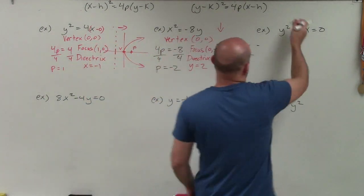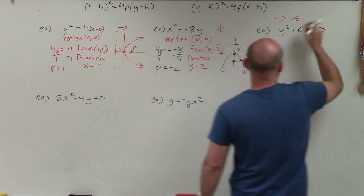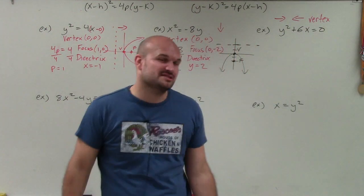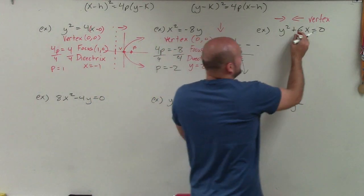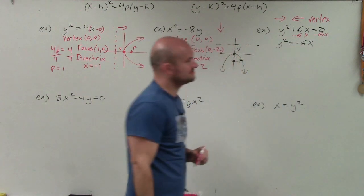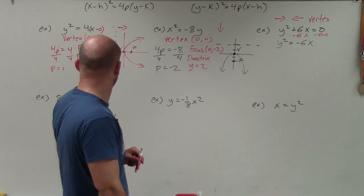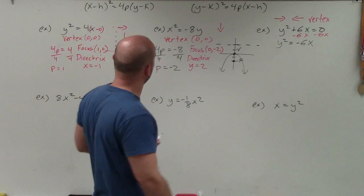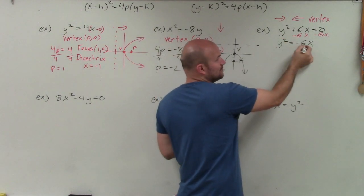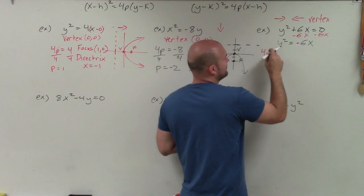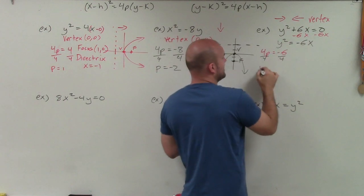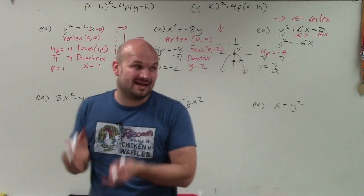Next: y is squared again, so this opens right or left. Vertex is at (0, 0). This one sometimes confuses students because it's not in standard format. We can subtract 6x from both sides to get y² = −6x. Now 4p equals the coefficient of the linear term, so 4p = −6. Divide by 4, reduce the fraction: p = −3/2. Since p is negative, the graph opens to the left.